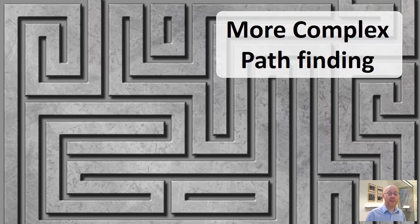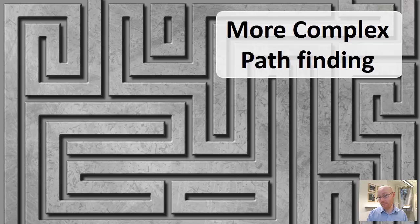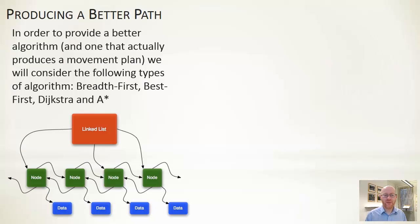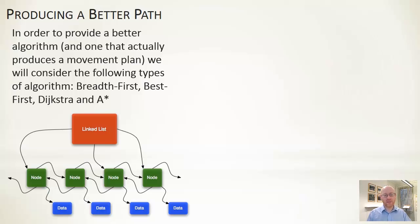We'll now look at more complex pathfinding forms that work within indoor environments with enclosed spaces preventing straight-line movement. We're going to look at four techniques: breadth-first, then best-first, then Dijkstra's search, and finally A*, which is what's used nowadays. Each of the first three will help build up our understanding towards A*.